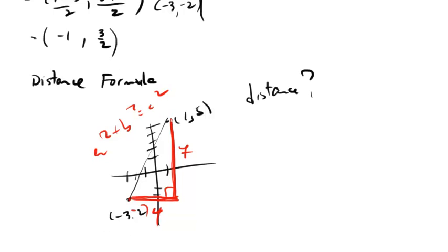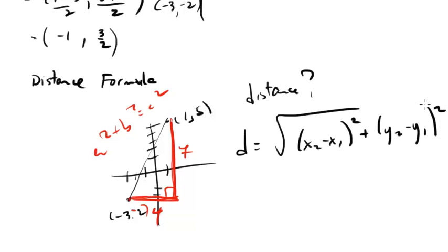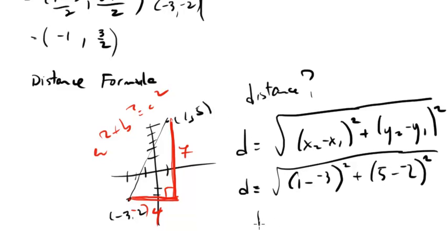But what is the distance formula? The distance formula method is to say, okay, √[(x2 - x1)² + (y2 - y1)²] all under this radical. So in this case, we're going to get d = √[(1 - (-3))² + (5 - (-2))²]. This is just going to be √[4² + 7²].